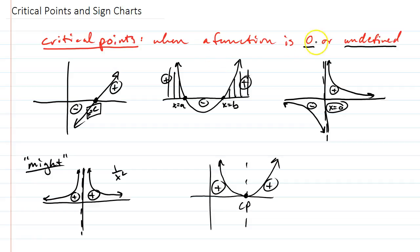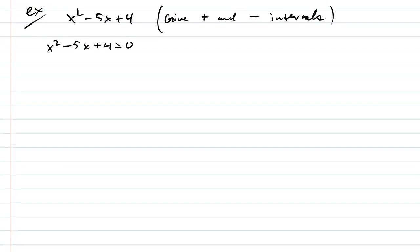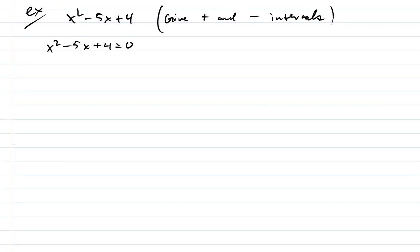And that's when a function is zero or undefined. So, let's do some examples, like x squared minus 5x plus 4. And the directions might say give positive and negative intervals. So, here's where we do a line chart. First of all, we need to figure out what are the critical points. Now, right away I'm setting it equal to zero. The reason is I want to know when my function is zero, and those will be my critical points. Now, in my definition up here, I also said undefined. But, these polynomials are not going to have undefined points. So, I'm not going to be looking for those quite yet.